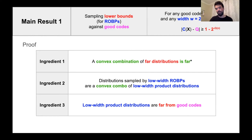Given these three key ingredients, it's easy to obtain our sampling lower bounds. By combining ingredient two and ingredient three, we get that distributions sampled by low-width ROBPs are a convex combination of distributions that are far from good codes. Then by applying ingredient one, we get that distributions sampled by low-width ROBPs are themselves far from good codes.